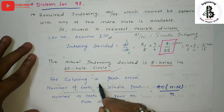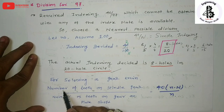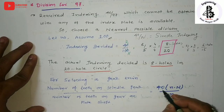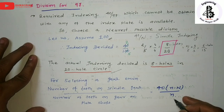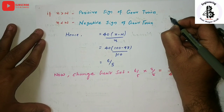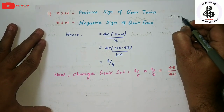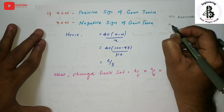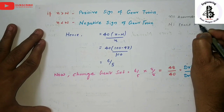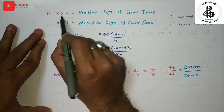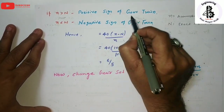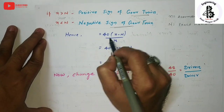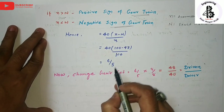For selecting the gear train, the relation is: number of teeth on spindle gear divided by number of teeth on the idler/change gear equals 40 times (n minus N) divided by N, where small n is the assumed number and capital N is the exact number. If small n is greater than capital N, a positive sign gear train is used.